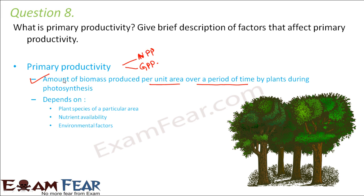The factors on which primary productivity depends are: plant species, as different plant species may have different productivity; nutrient availability, where better nutrients lead to better productivity; and environmental factors like climate and water availability, which also determine primary productivity.